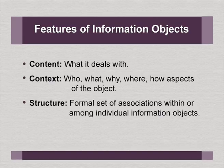So let us go into some of the features of information objects, then we will connect it to metadata. The content of any information object is what it deals with. The context is the who, why, where, and how aspects of the object — that is, who created it, what was created, why it was created, where it is located. All these aspects are the context about the object, which normally we should be able to include in the metadata.